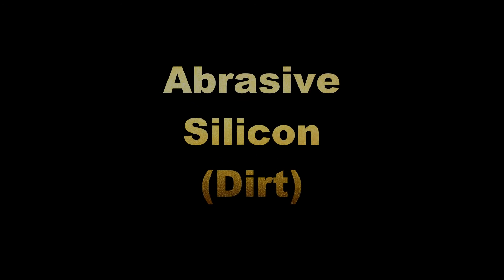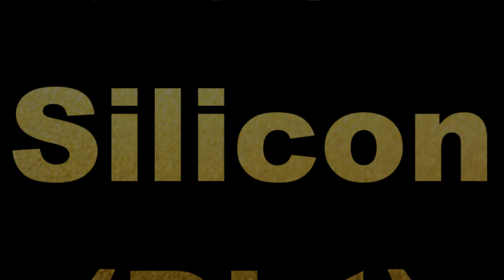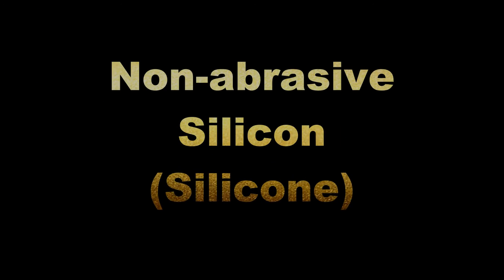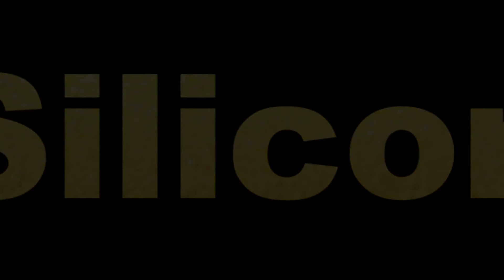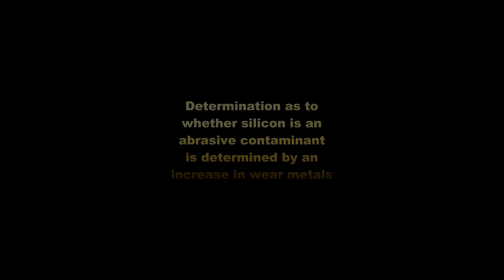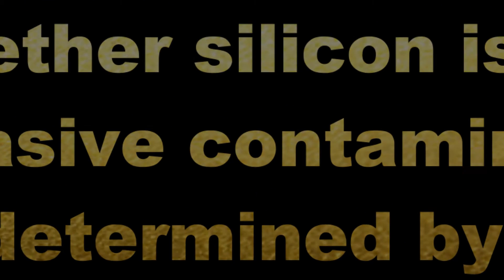Silicon as a contaminant is typically associated with an abrasive form of dirt or sand. Silicon may also be present in a non-abrasive form such as the compound silicone, which is present in engine sealants. The abrasive forms of silicon produce a particular pattern of wear in an engine and would be considered a contaminant under these conditions.